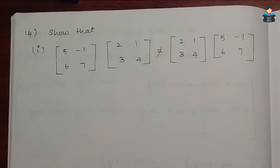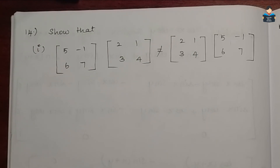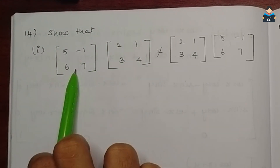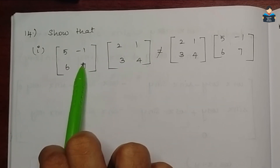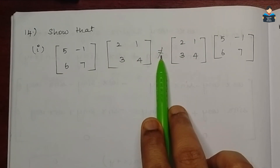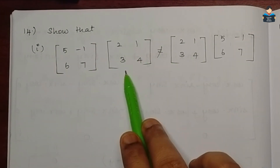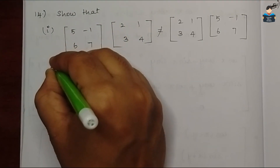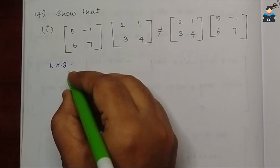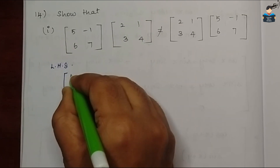Hello everyone, welcome to our channel. In this video, Class 12 NCERT Math Chapter 3 Matrices, Exercise 3.2, Question 14. First subdivision: on the left-hand side we have two matrices, and we need to prove that the multiplication of those two matrices is not equal to the RHS. So first, let us complete the LHS part.